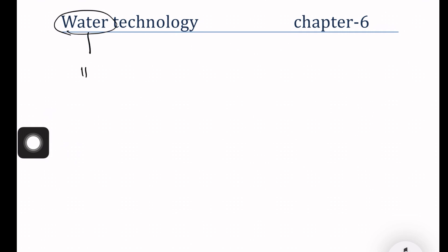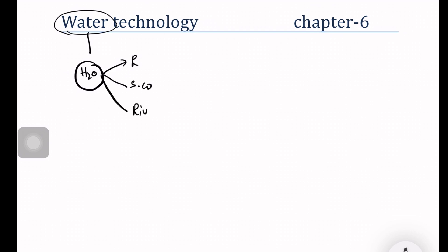First, let's talk about water — the source of water. The chemical formula of water is H2O. For example, sources include rain water, sea water, river water, and underground water. The important concept is that sea water contains 3.5% of salt.